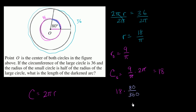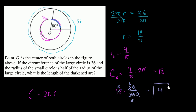That's the same as 8/36ths. Dividing numerator and denominator by 4 gives 2/9. Then 18 times 2/9: 18 divided by 9 is 2, and 2 times 2 equals 4. The arc length is 4.